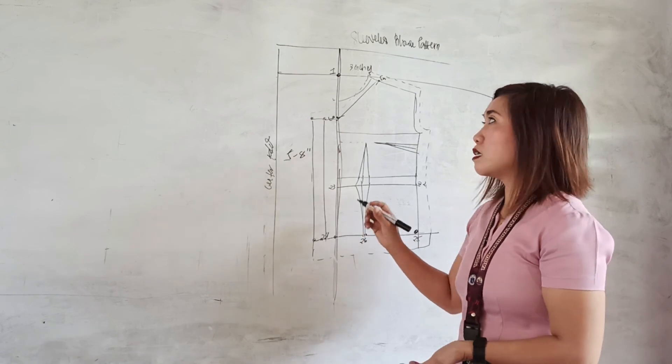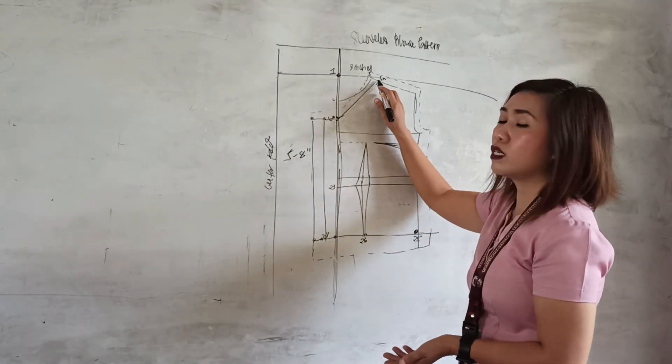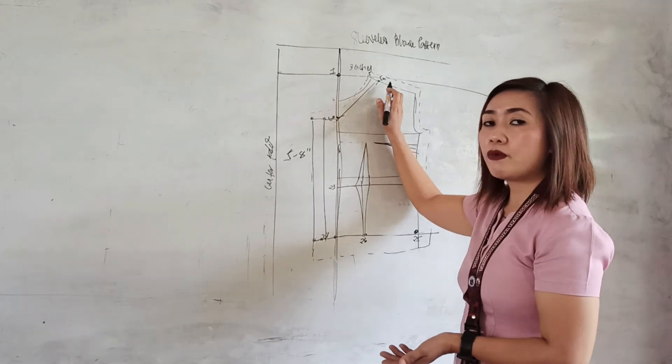For example, from five to 5a it shouldn't be one inch but it should be one-half only. That is how we do it.